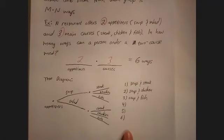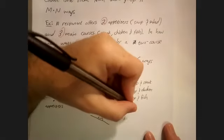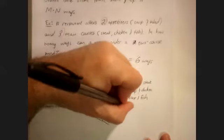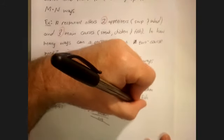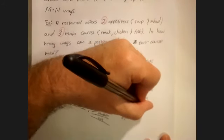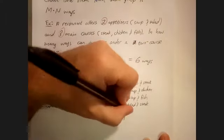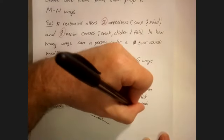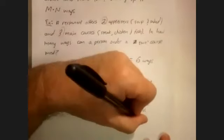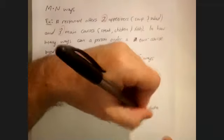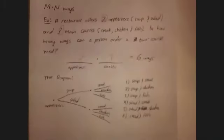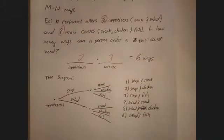And of course, I have the same three options with my salad: salad and steak, salad and fish, salad and chicken. Those are our six possible ways.